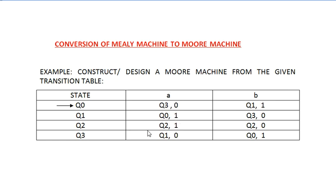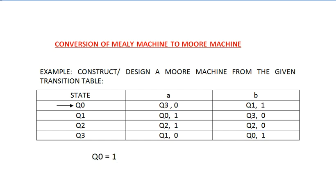The second step: we have to check for every state what is the corresponding output for every input. Starting with the initial state Q0 — looking into Q0 in this table, Q0 appears here and here. The corresponding output for Q0 is fixed, that is 1. So I don't have a problem; I can directly write that for Q0 the corresponding output is 1, and Q0 will remain as it is with output 1.